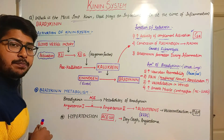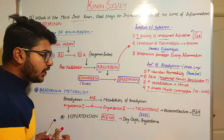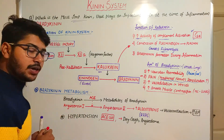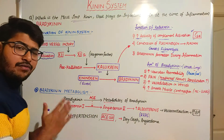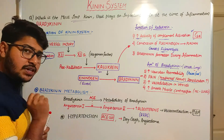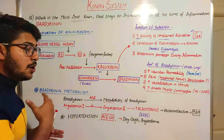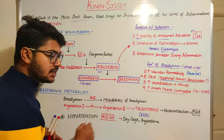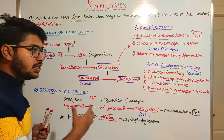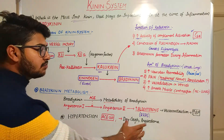If bradykinin is normally produced in any physiological or pathological condition, it must be metabolized. The important factor required for this metabolism is angiotensin converting enzyme (ACE). Bradykinin is broken down by ACE to form its metabolites. As we have read in the RAS mechanism — the renin-angiotensin-aldosterone mechanism — ACE converts angiotensin 1 to angiotensin 2. Angiotensin 2 further increases aldosterone production, whose function is to increase vasoconstriction and raise blood pressure.